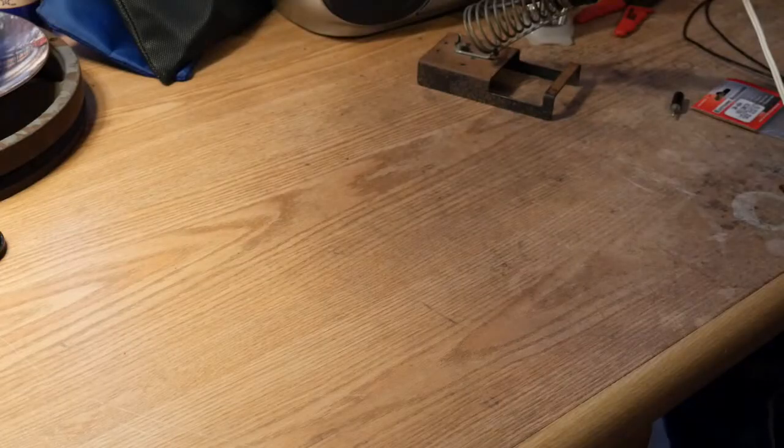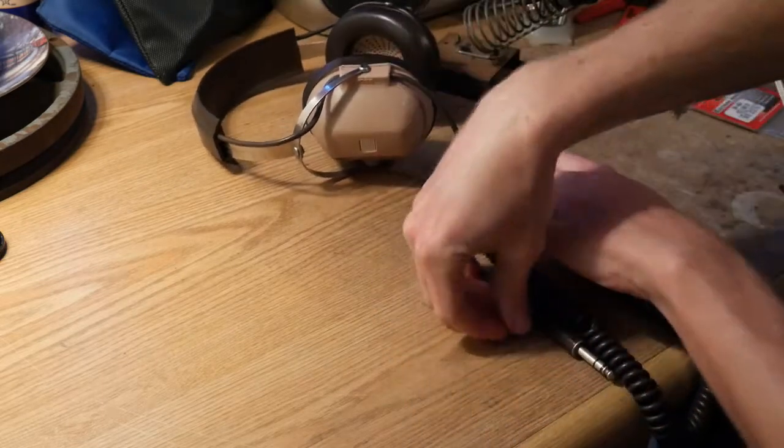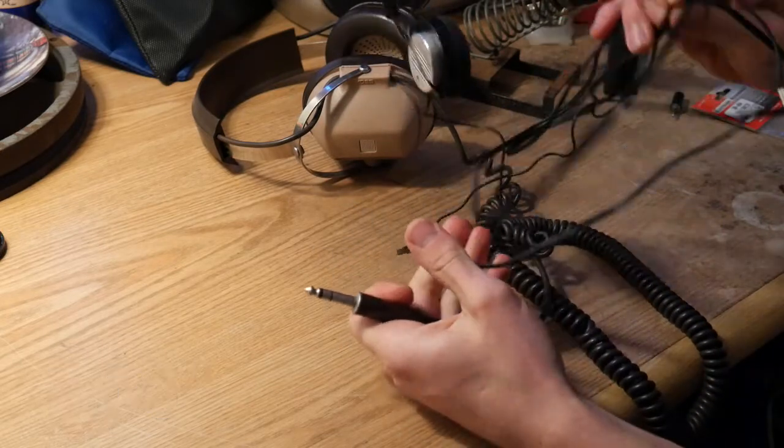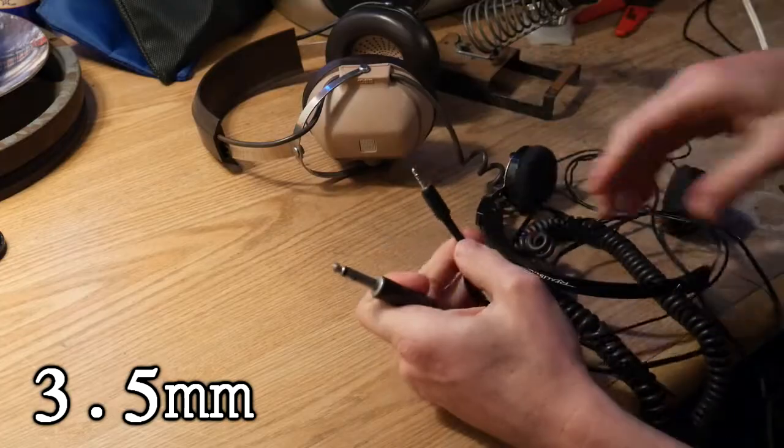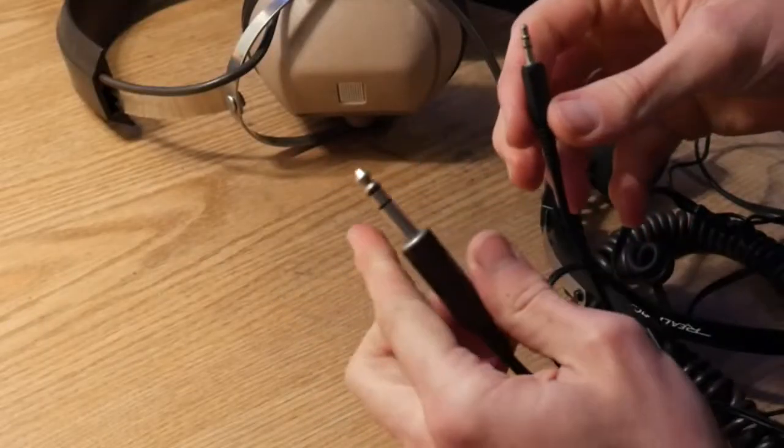Alright, so before we get started, let's go over some of the features and differences between these headphones. Because of course this one has the regular size jack, this one has the mini jack. These are both stereo headphones, which means they have three conductors.